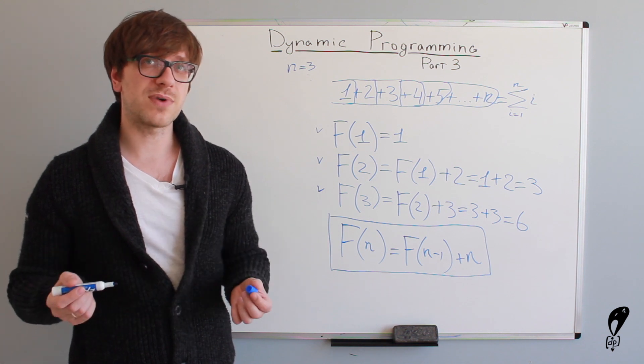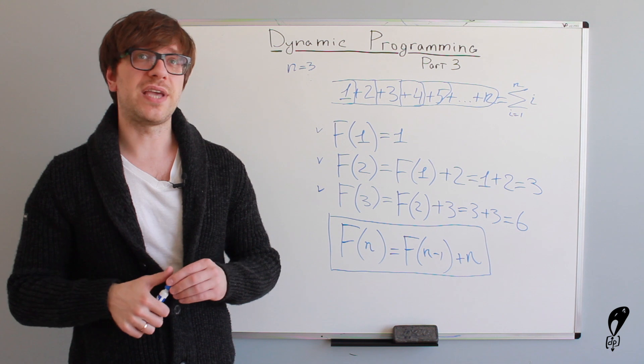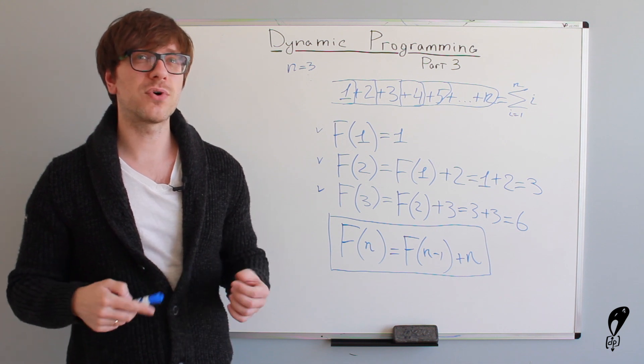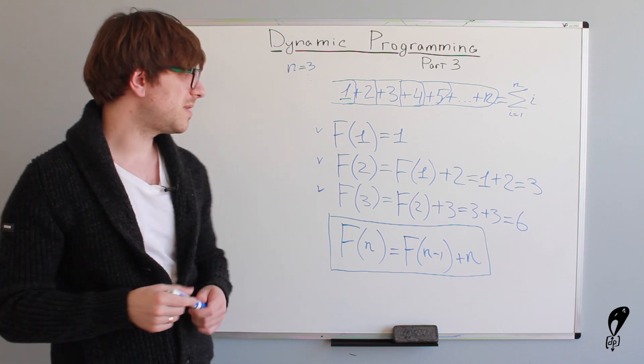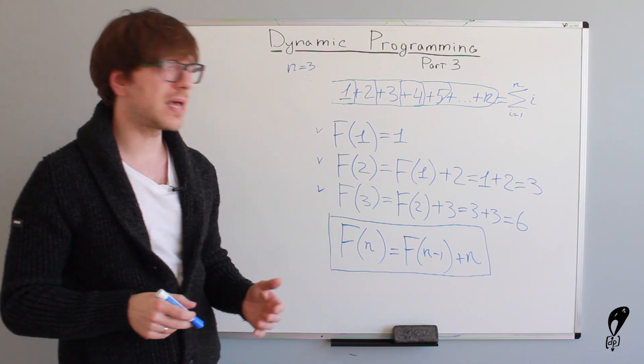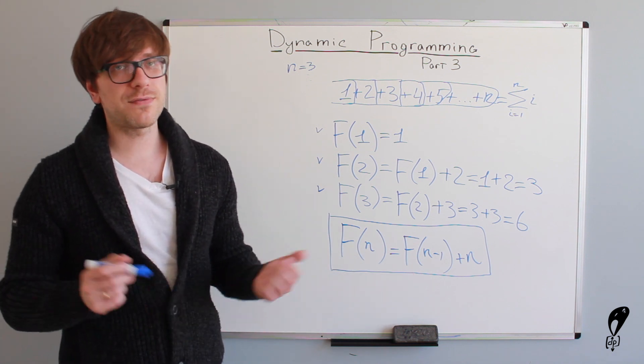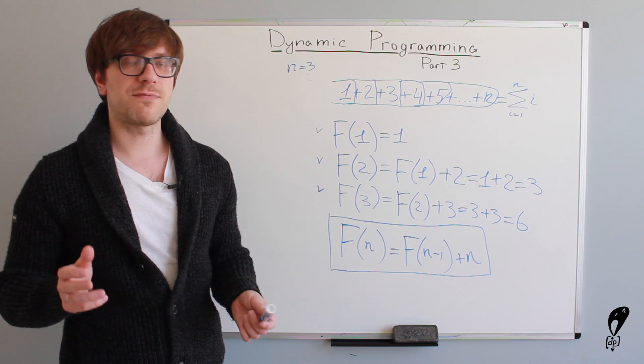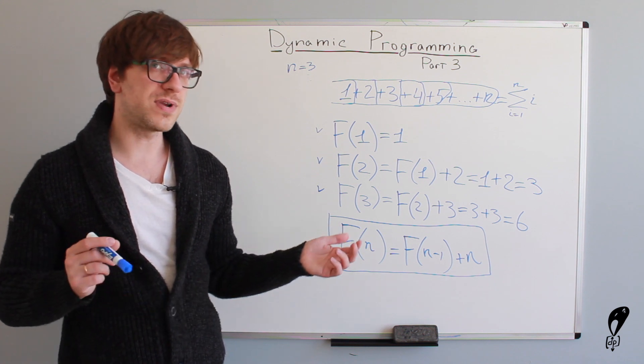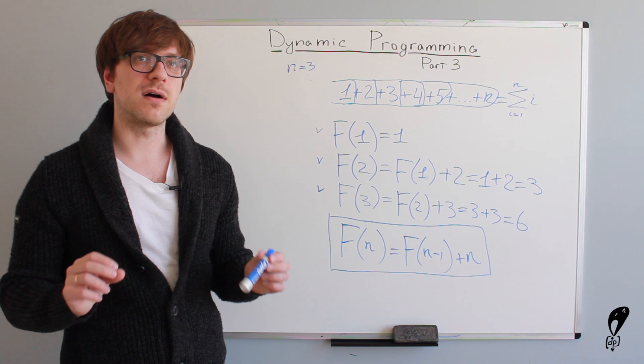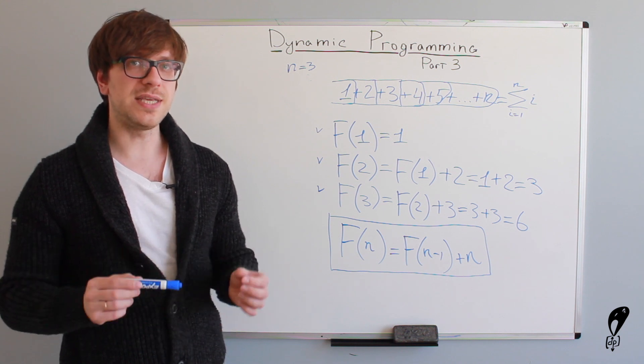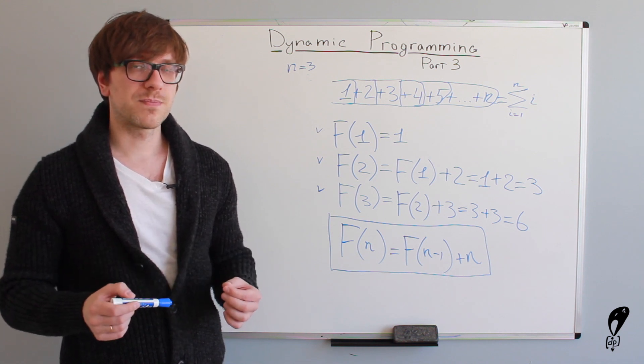What's different about other problems? Well, it's just the implementation details. The other problem may have a slightly more complicated formula. Maybe it's not just f of n minus 1, but something like f of n minus 1 plus f of n minus 2 multiplied by 3, and so on. But the core idea of dynamic programming technique stays the same.